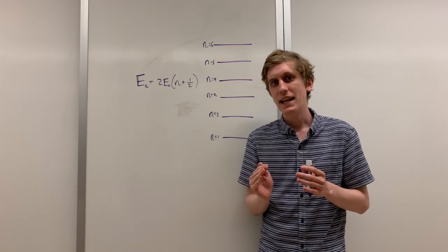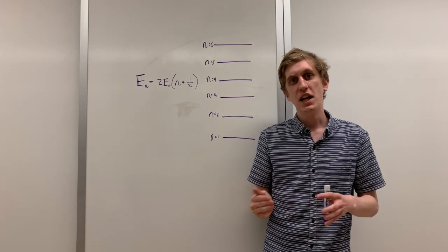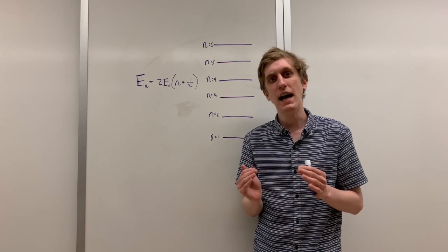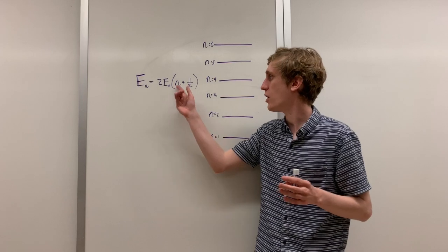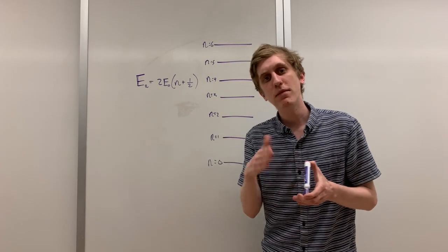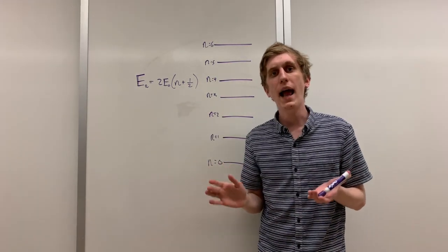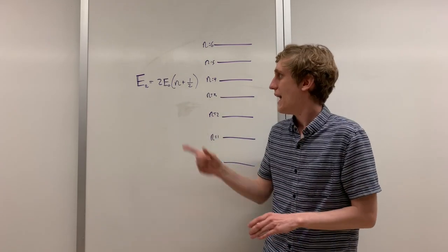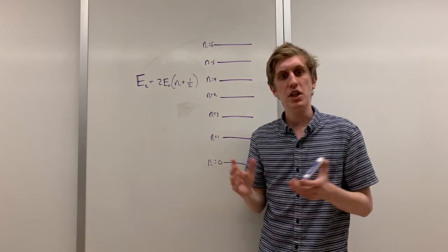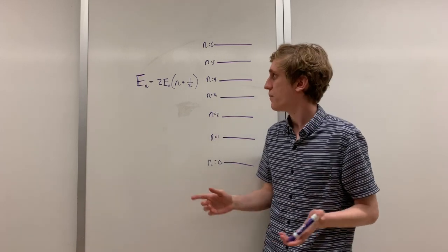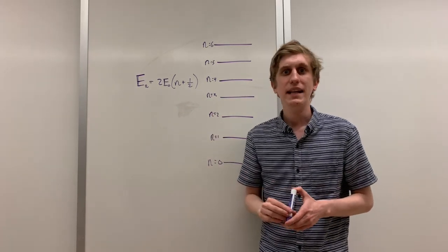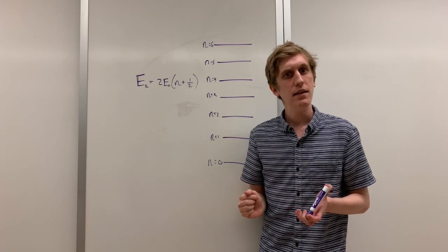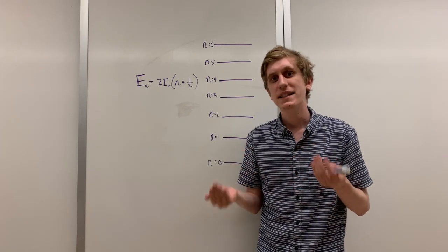It turns out in quantum mechanics, it's not possible for this energy to be zero. It has to have some minimum energy, which we call E-knot. If we plug zero into this equation for n, we just get out E-knot as the energy. n equals 1 gives us 3 E-knot. n equals 2 gives us 5 E-knot. n equals 3 gives us 7 E-knot, and so on.